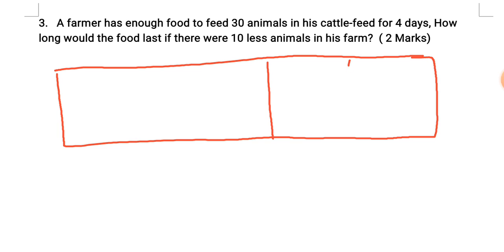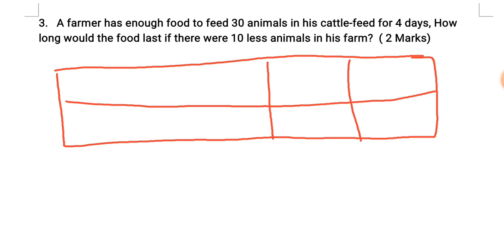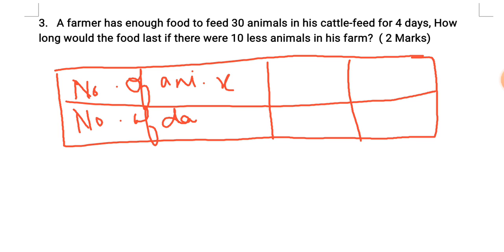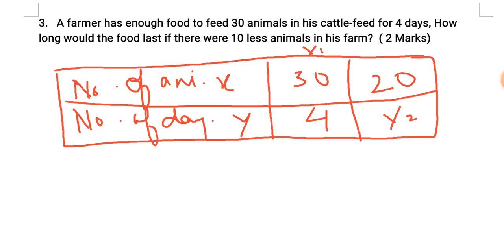If the animals are less, then the food will last more days. The two quantities are: number of animals, this is x, and number of days the food lasts, this is y. In x we have 30 animals and food lasts 4 days as y1. Now animals are 20, and we need to find y2.